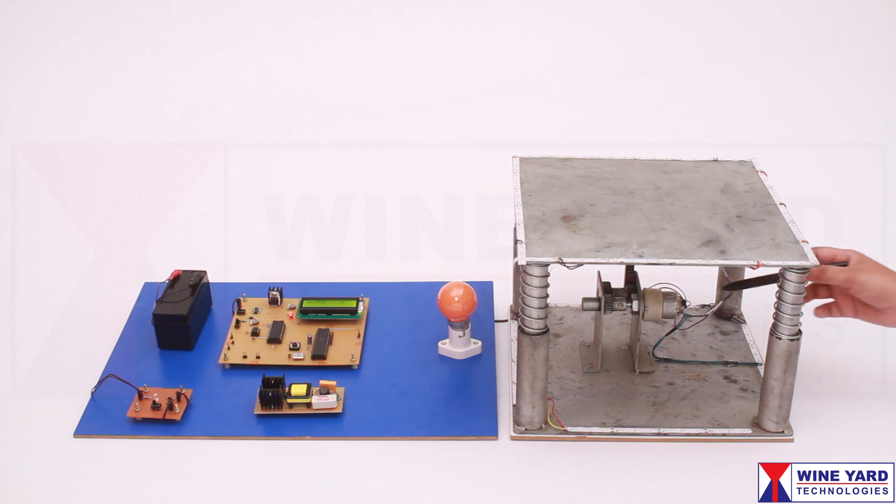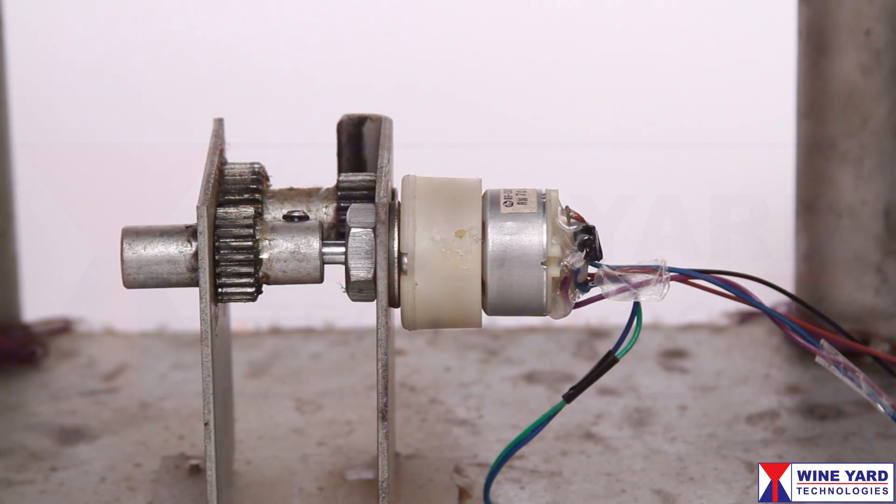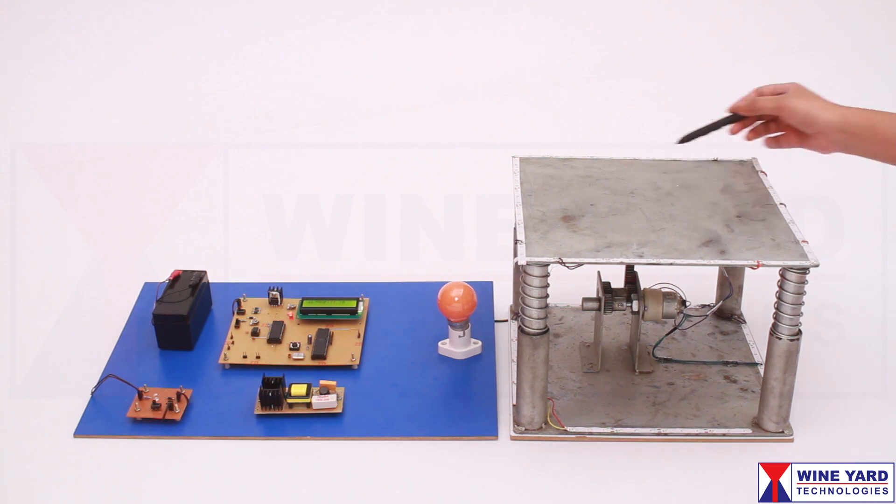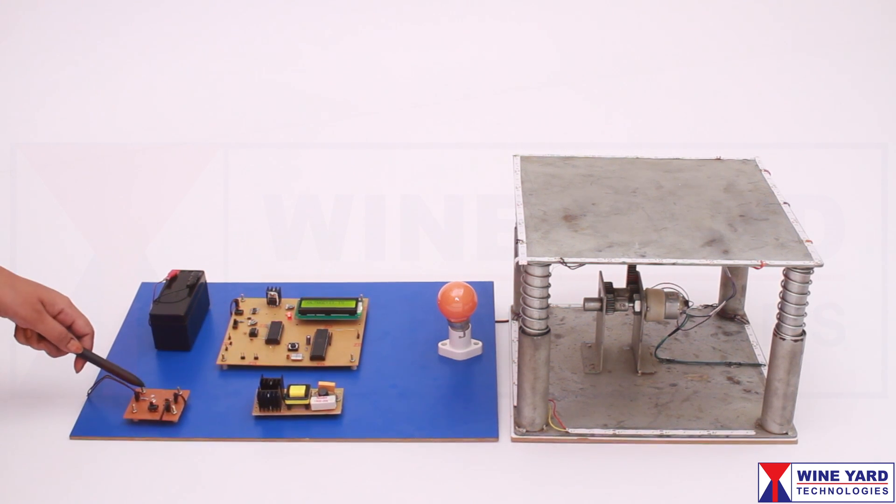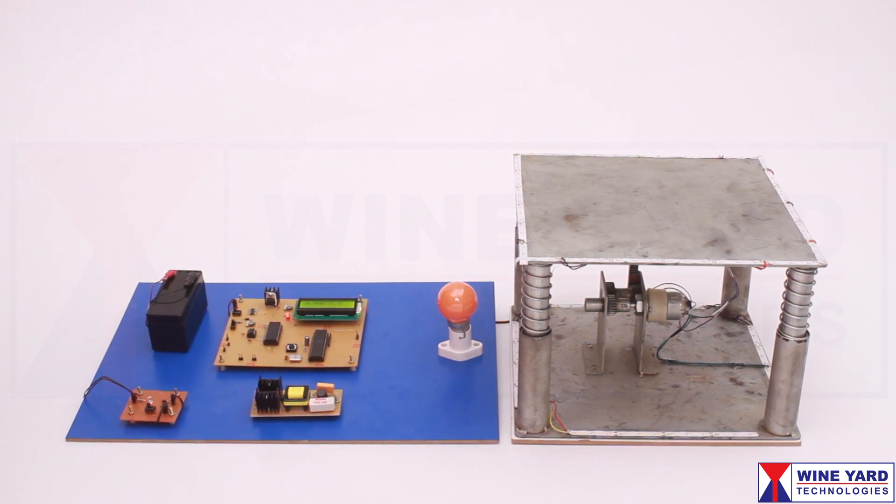This bridge rectifier is used to correct the polarity changes. An LED array is connected to this generator to denote and prove the power generation. This LED is also provided to indicate the power generation.